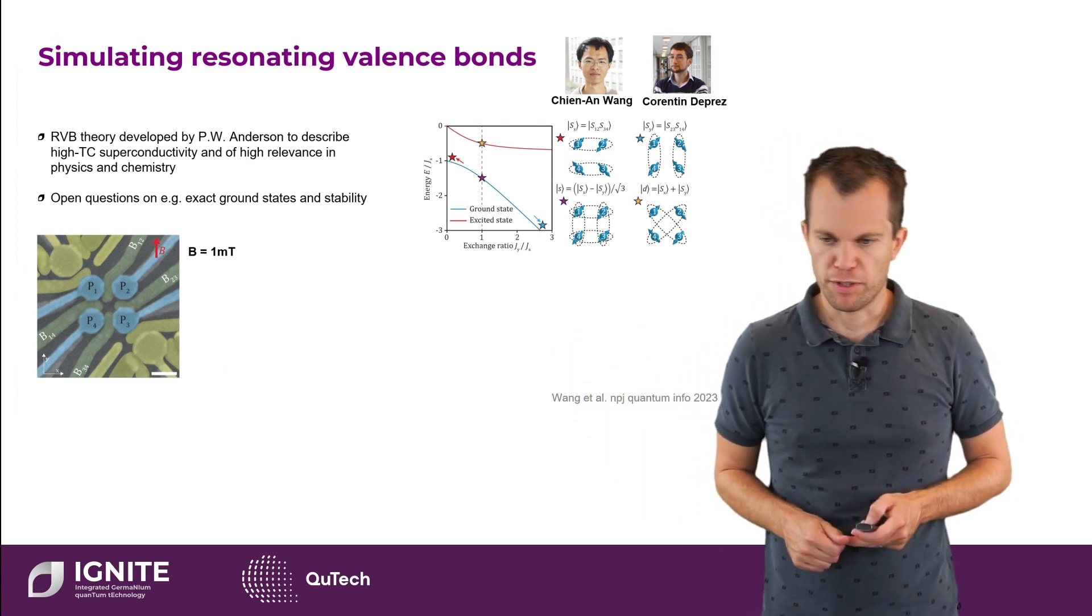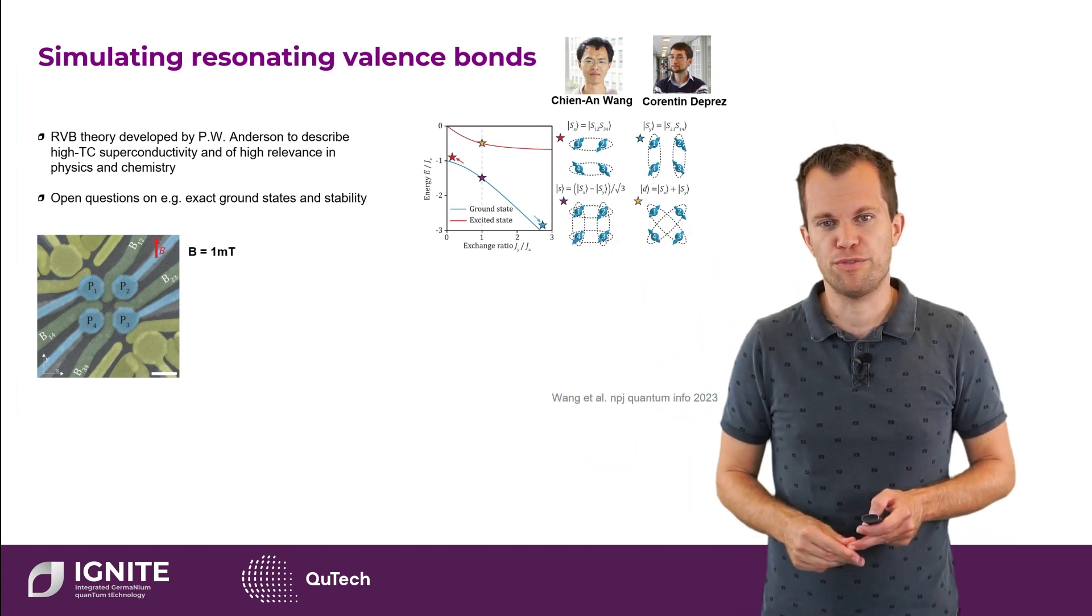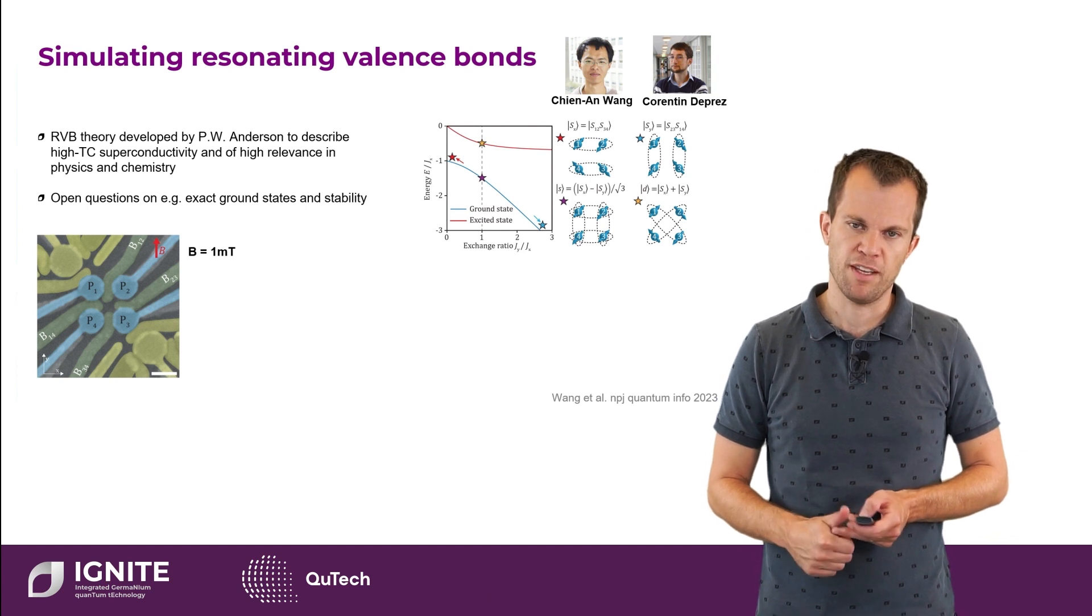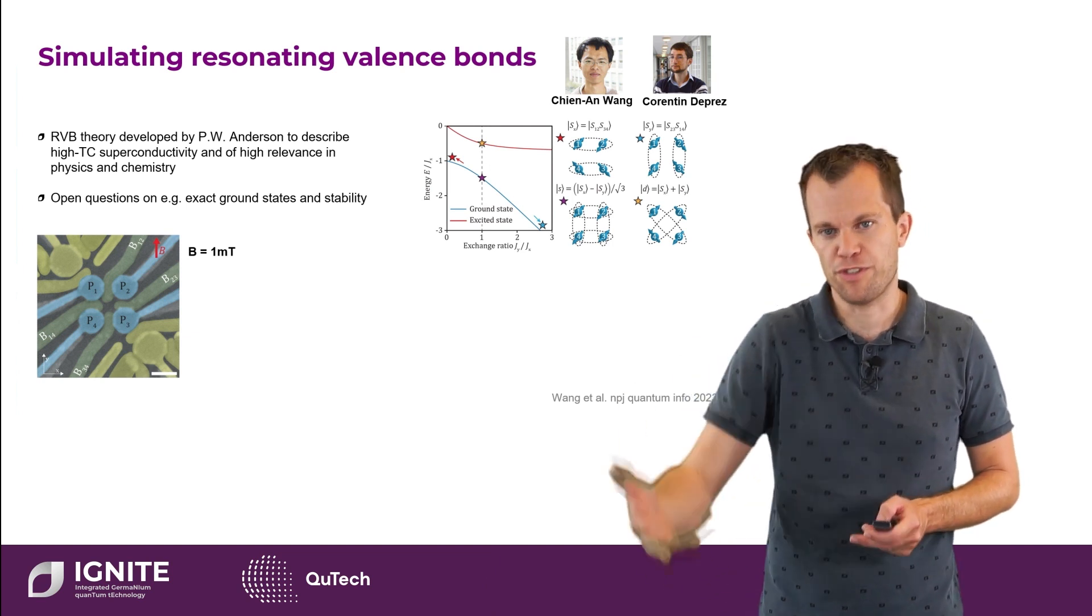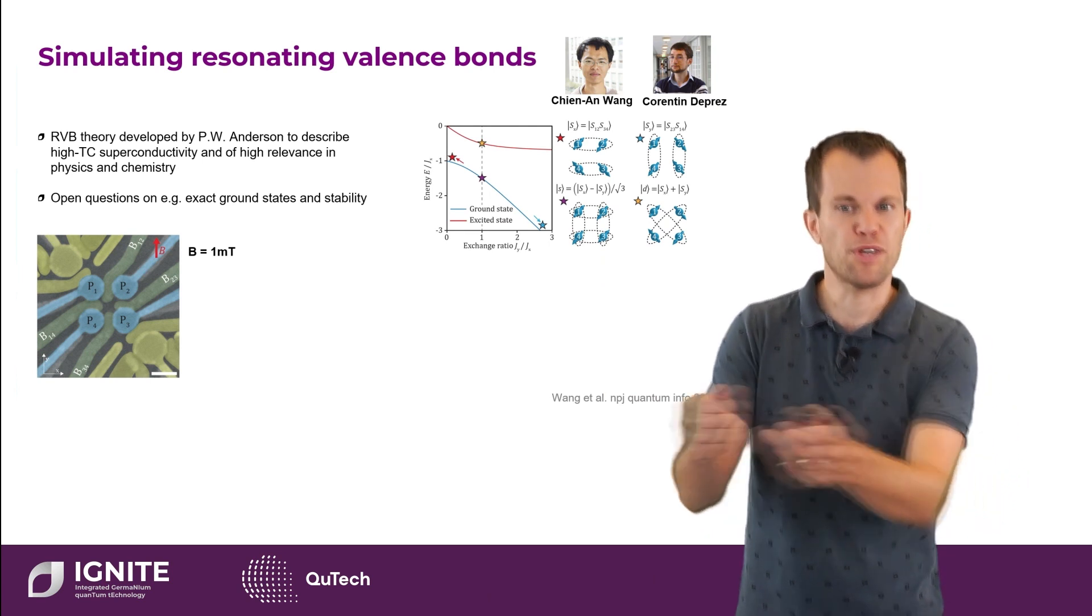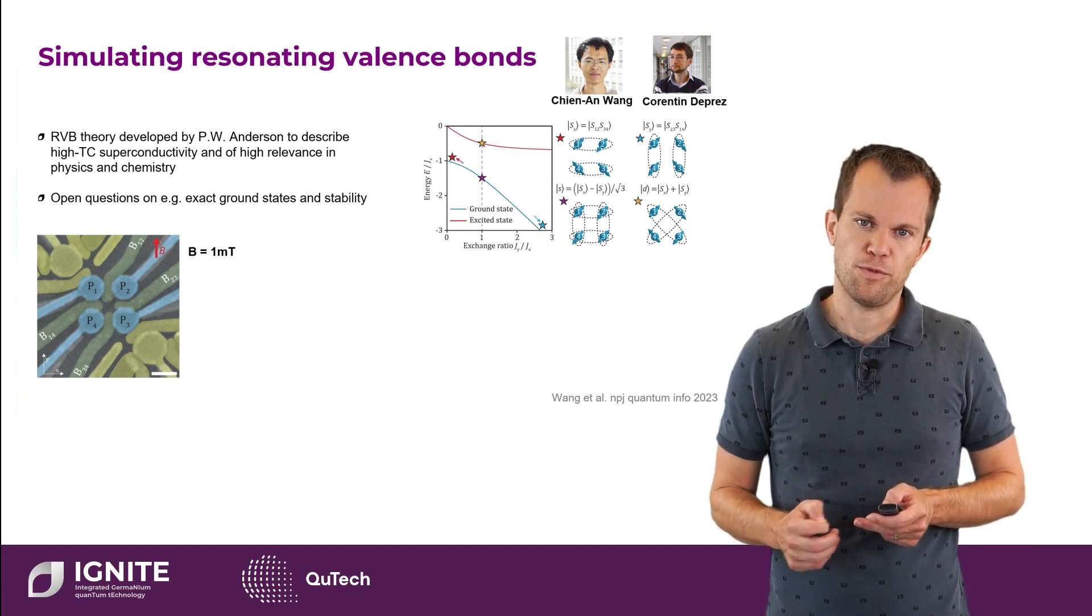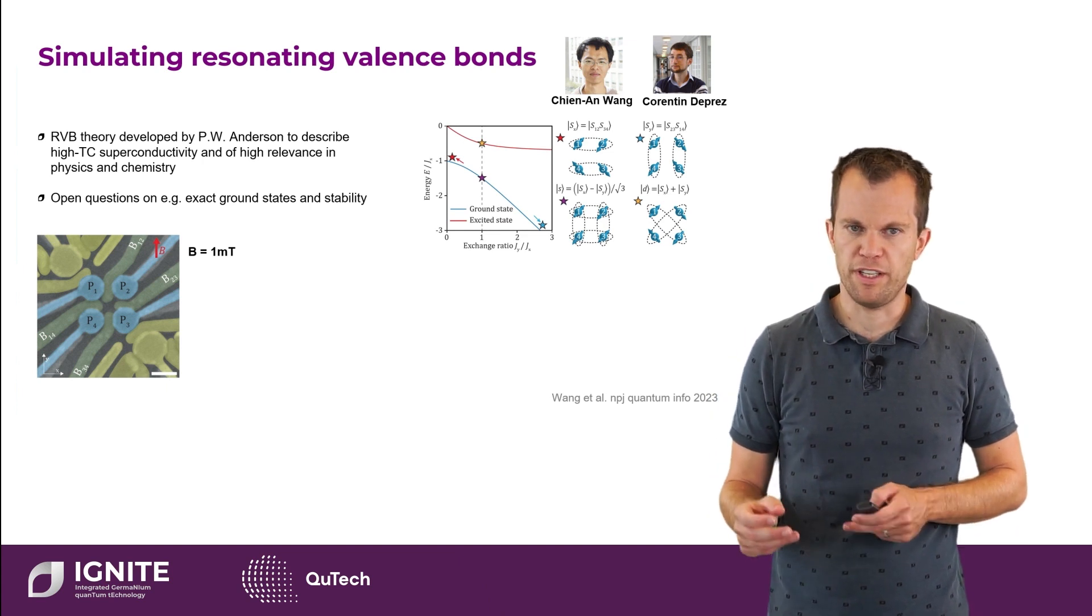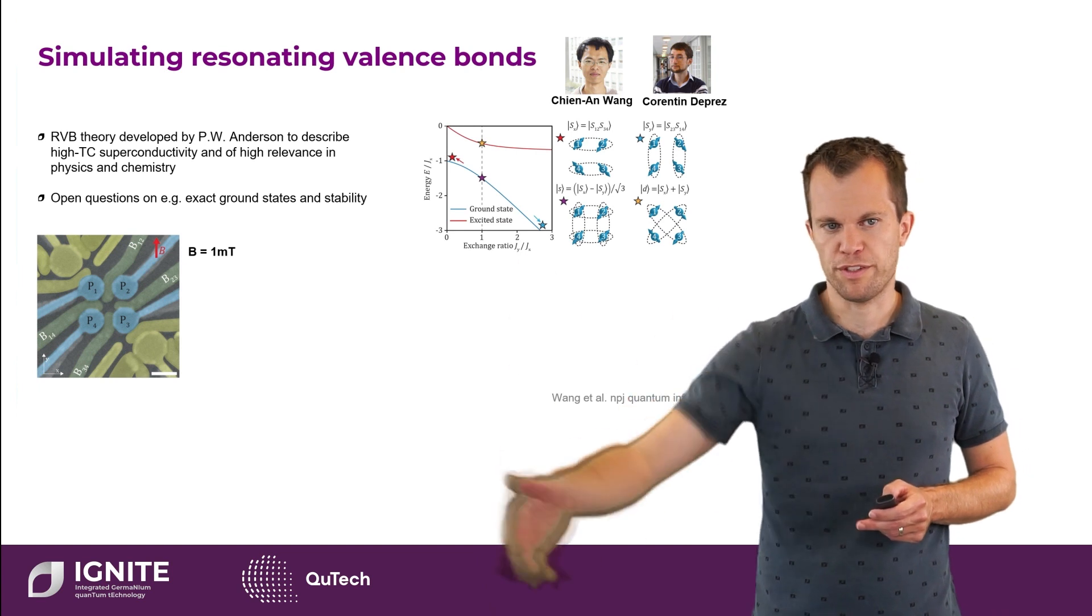So we could continue and focus on fault-tolerant quantum computing. One possibility and an interesting direction is also to ask the question, okay, maybe already in the near future, can we already do something relevant with smaller qubit systems and not to have this abundance that you may have in error correction. And in particular, since germanium qubits are described by a Fermi-Hubbard model and therefore a quantum mechanical system, it may make sense to not first try to convert this into some digital quantum algorithm, but rather to try to simulate relevant physics directly. And so here you see a first demonstration of a quantum simulation in germanium. And so what we wish to study here is to observe the dynamics of four coupled spins. And in particular, we wish to study the resonant valence bond theory developed by Phil Anderson at a time to describe high-Tc superconductivity. And it turns out to be of relevance in physics and chemistry throughout.